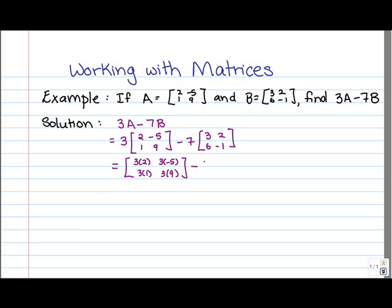Next, we're going to multiply the 7 by each entry in the matrix B. Now, there's different ways of doing this question. Rather than doing 3A minus 7B, you can think of it as 3A plus negative 7B, and then multiply all of the entries in B by negative 7, and add the two resulting matrices together. But here, let's treat this as matrix subtraction. So we're going to just multiply the entries in B by the 7, and then subtract the results. So again, the 7 multiplies each entry, so we get 7 times 3, 7 times 2, and so on.